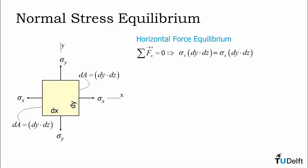So we get this being equal to sigma x times dy times dz, which tells us that sigma x on the right side of the element has to equal sigma x on the left side of the element.